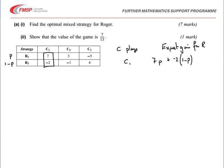In a similar way, if Corrie plays C2, we get 3P minus 1 minus P. That's 4P minus 1. And finally playing C3, negative 5P plus 4 times 1 minus P. And that's 4 minus 9P.